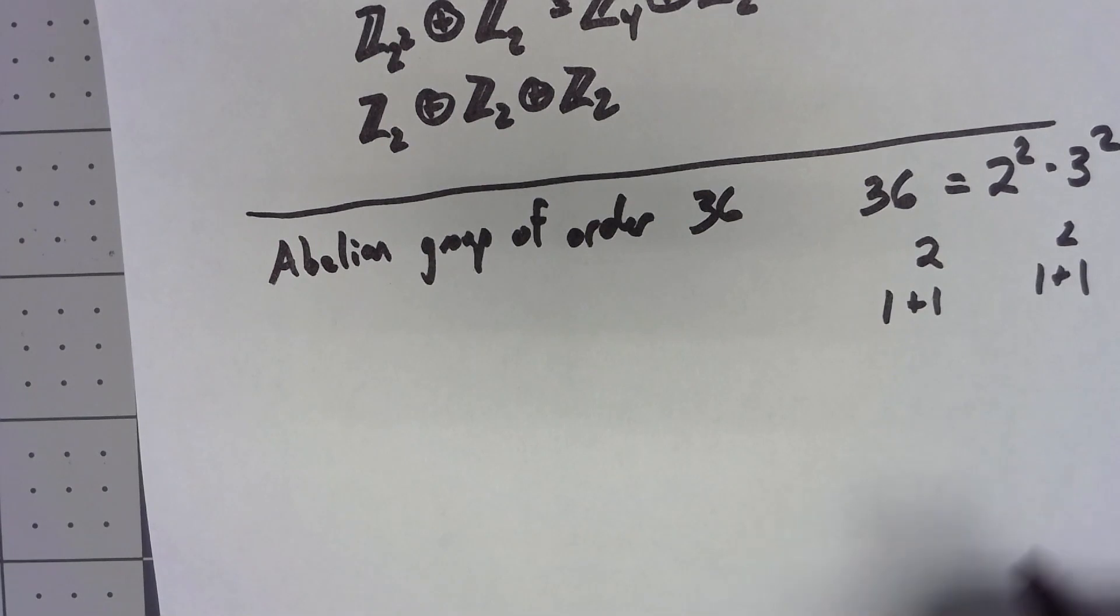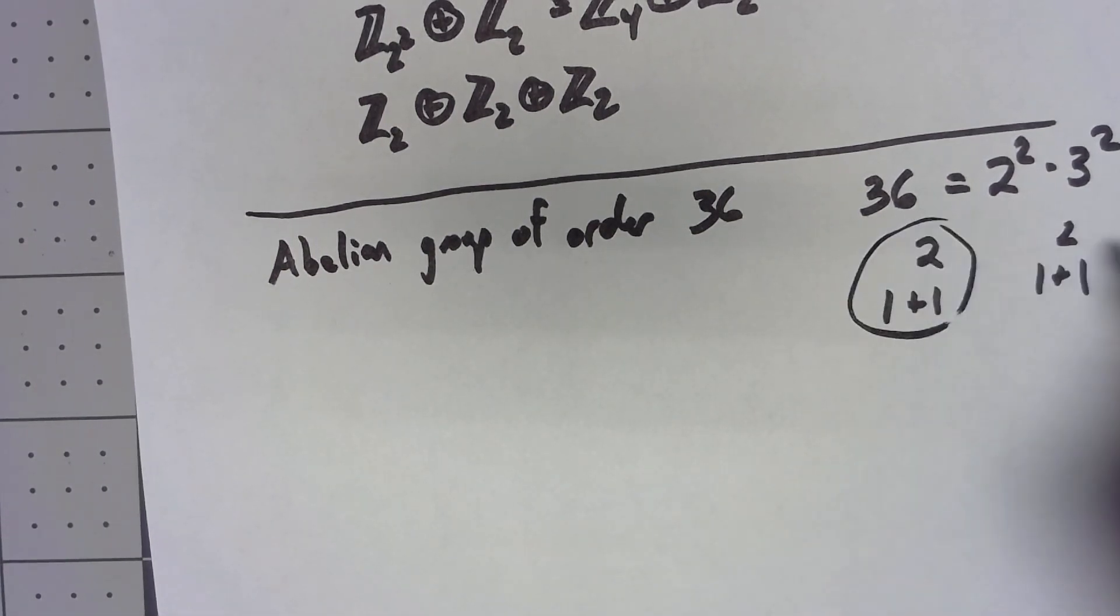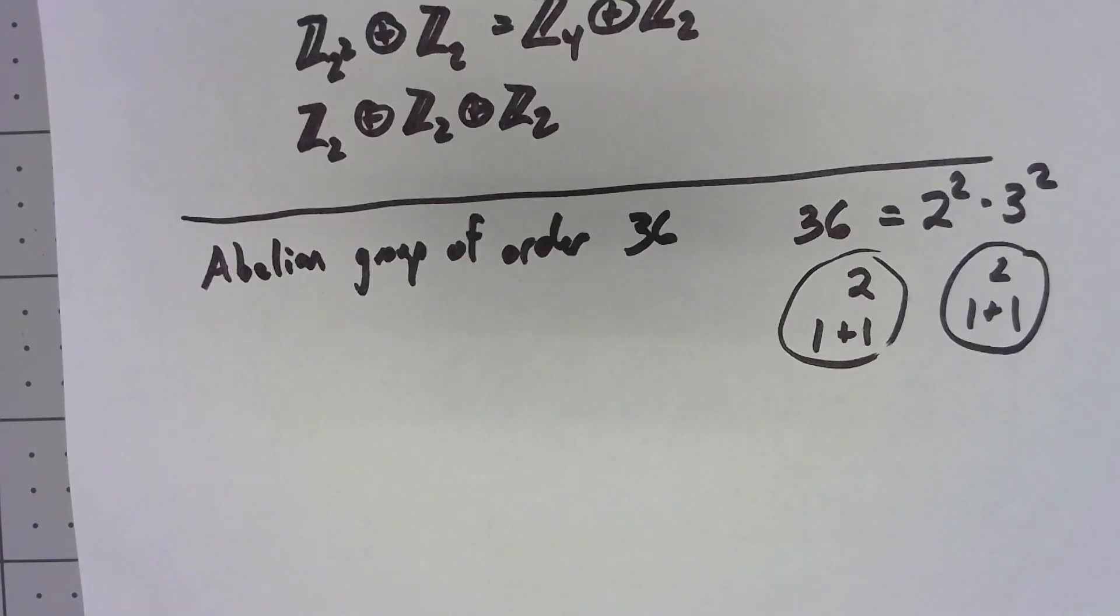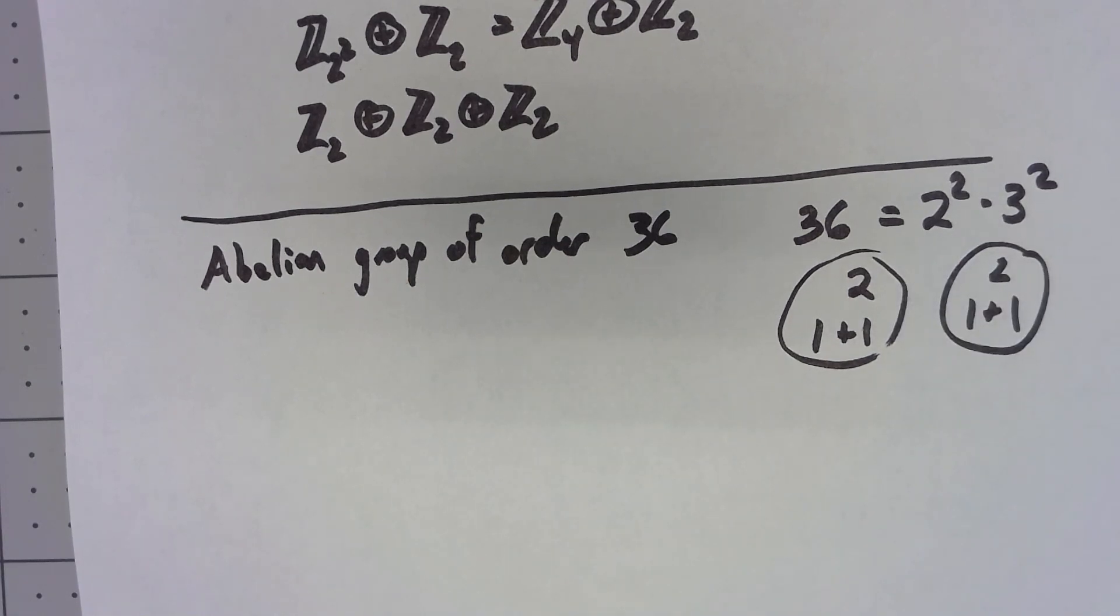2 is either 2 or it's 1 plus 1, and the same thing for the other one. So my two parts can be either one of these things. My three parts can be either one of these things. So I really have four possibilities for abelian groups of order 36.